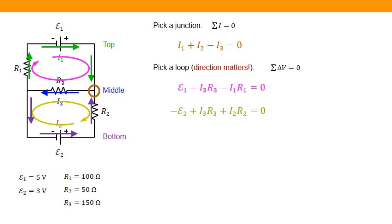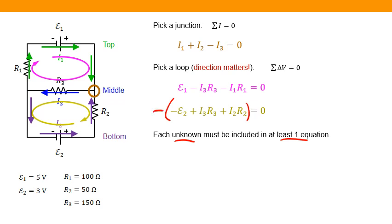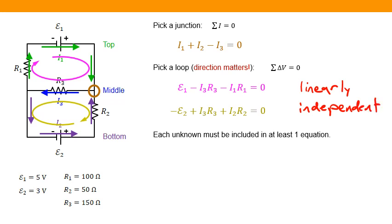Now I have three equations with three unknowns. One thing to be careful of is making sure each equation is independent — a useful check is ensuring each unknown appears in at least one equation, and that no equation is simply another equation multiplied by −1. We call this being linearly independent. As long as all equations are linearly independent, math tells us we can solve the system.